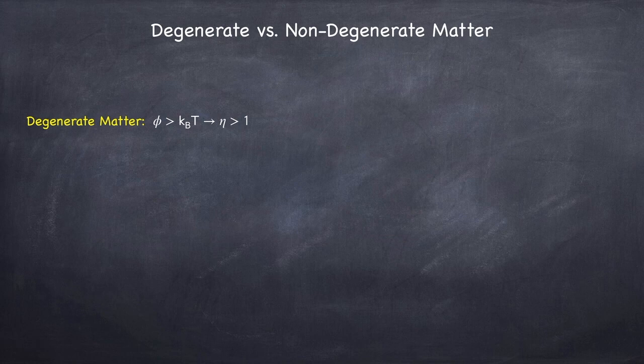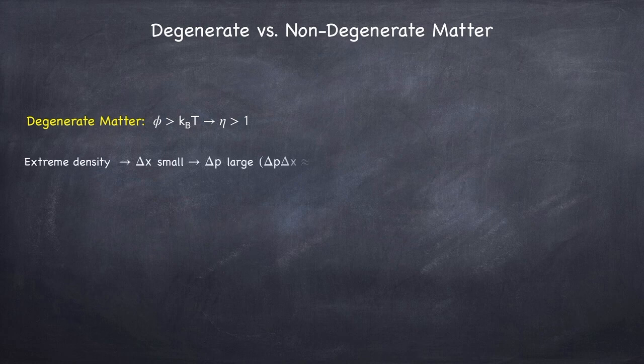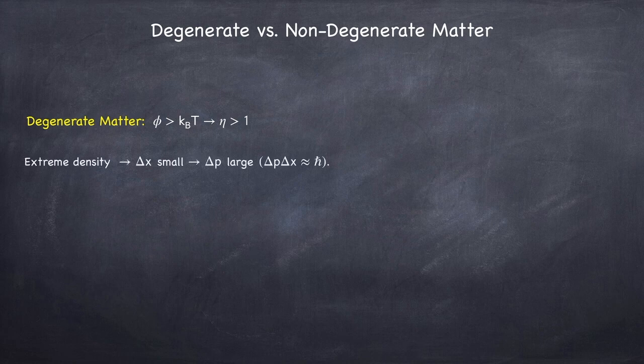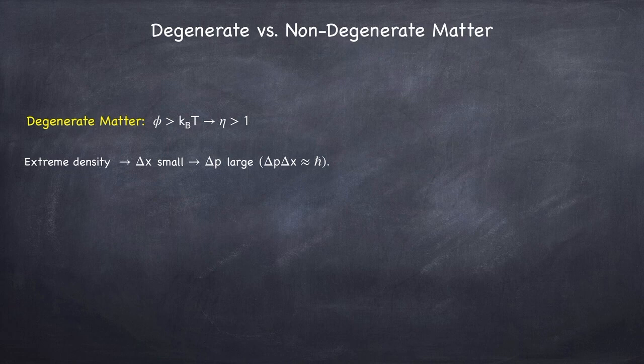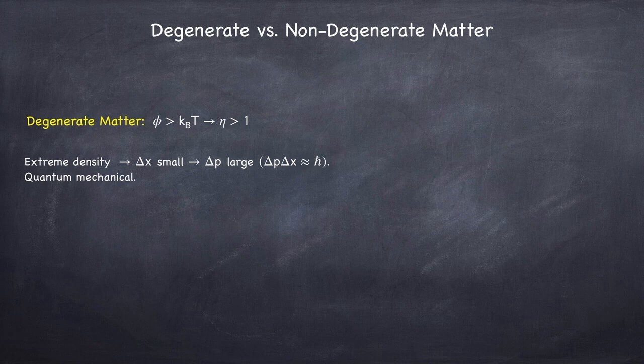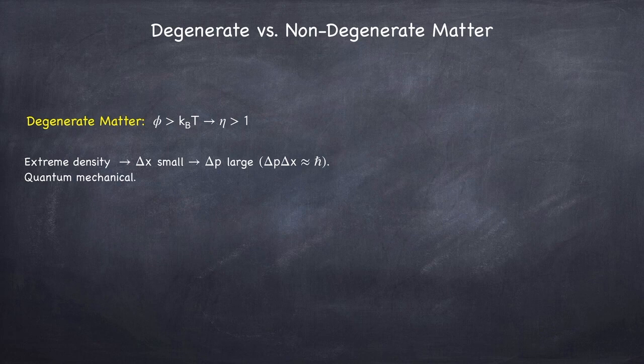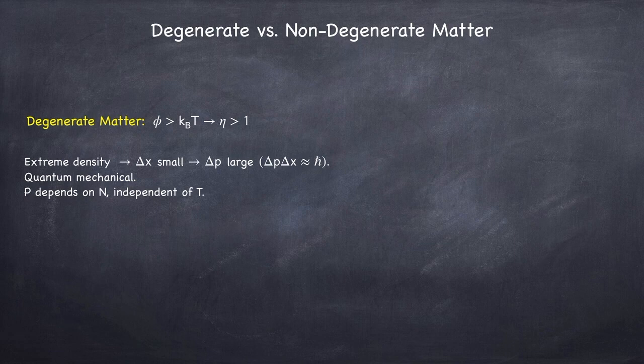So this type of matter is characterized by extreme densities, meaning that the particle separation, which I'm calling delta x, is very small, and due to the Heisenberg uncertainty principle this means that the range in momentum is very large. Such matter is intrinsically quantum mechanical. And it behaves in ways that we don't experience as human beings. One important characteristic of this type of matter is that the pressure is entirely dependent on the number of particles, and independent on the temperature.